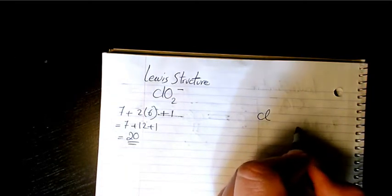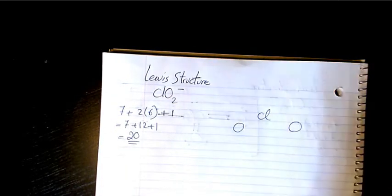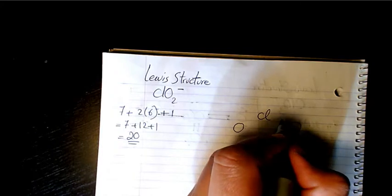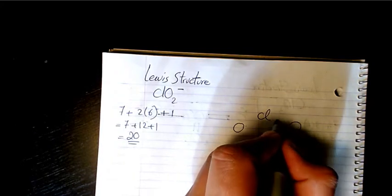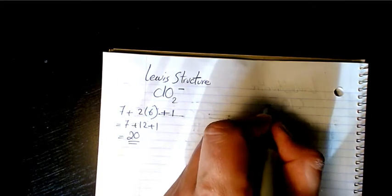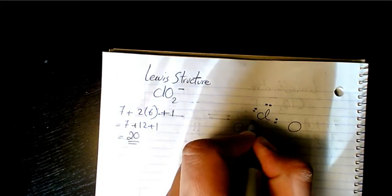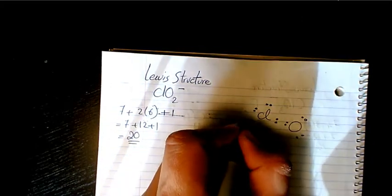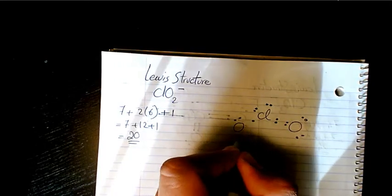Then we have Cl, two O's. So we have two, four, six, and seven for oxygen. We have two, four, six, two, four, six.